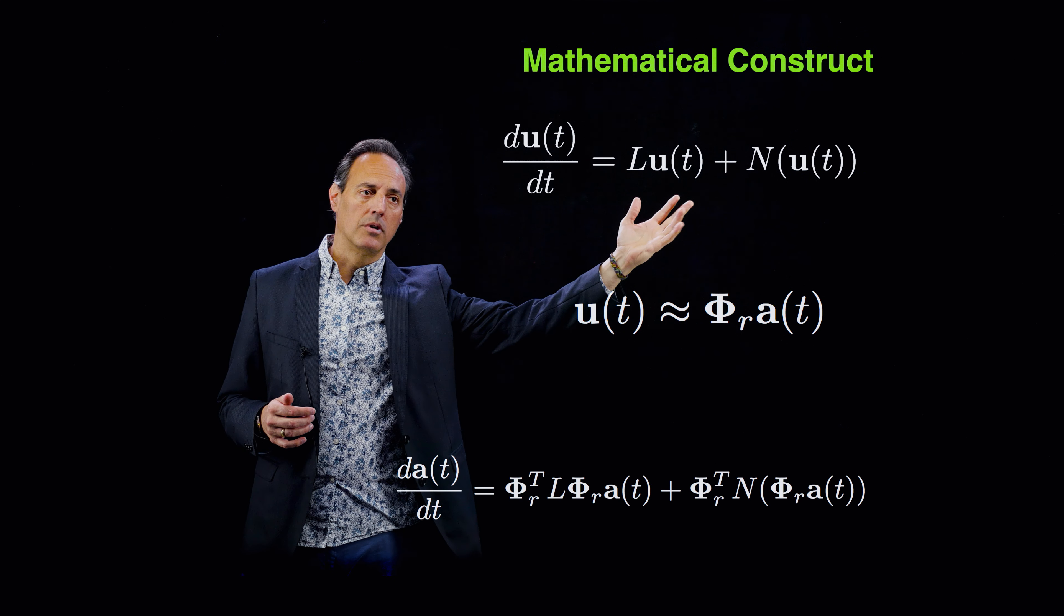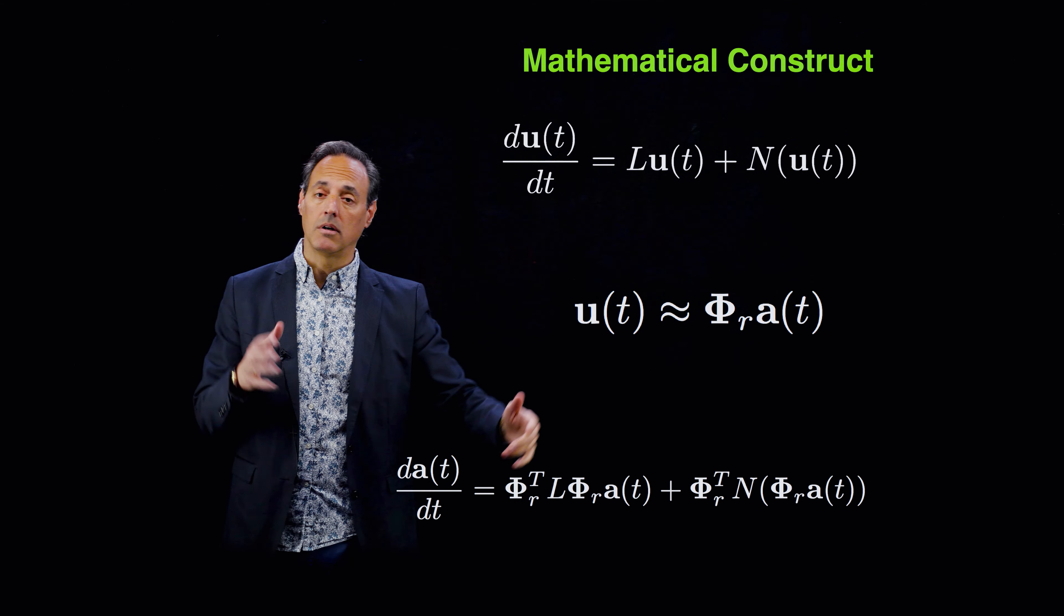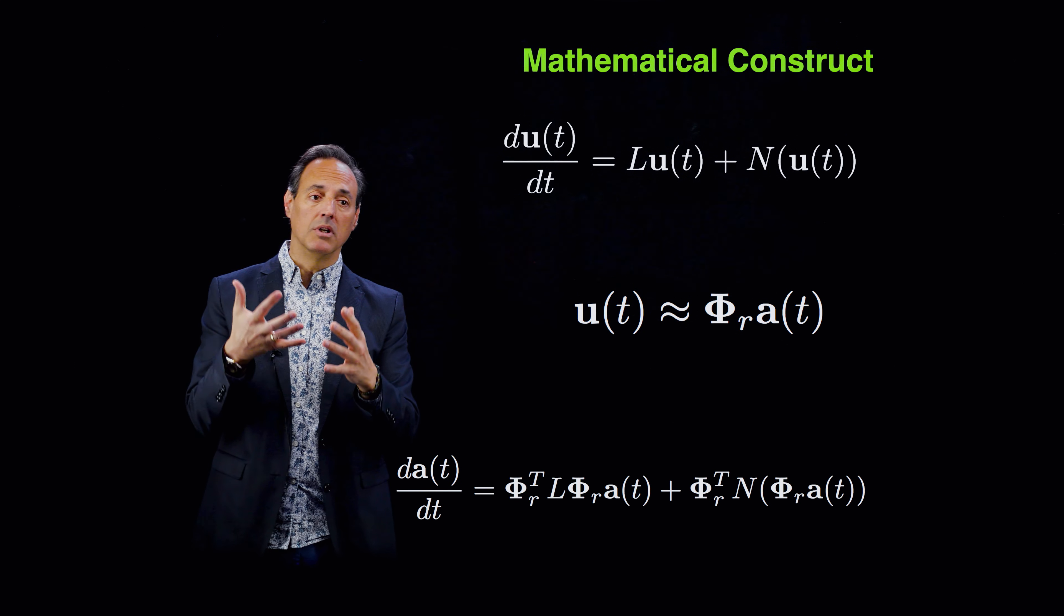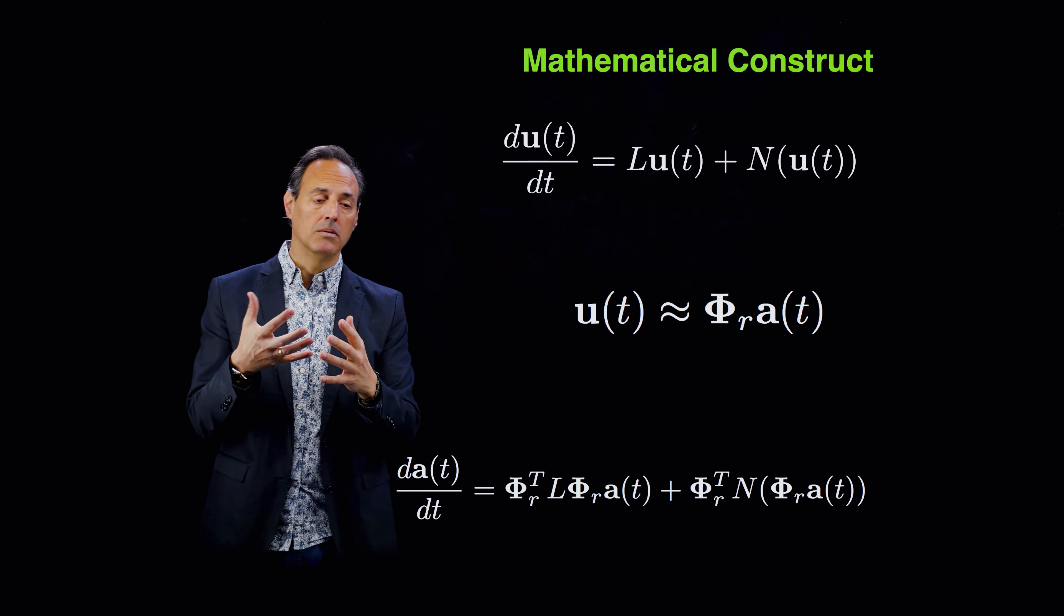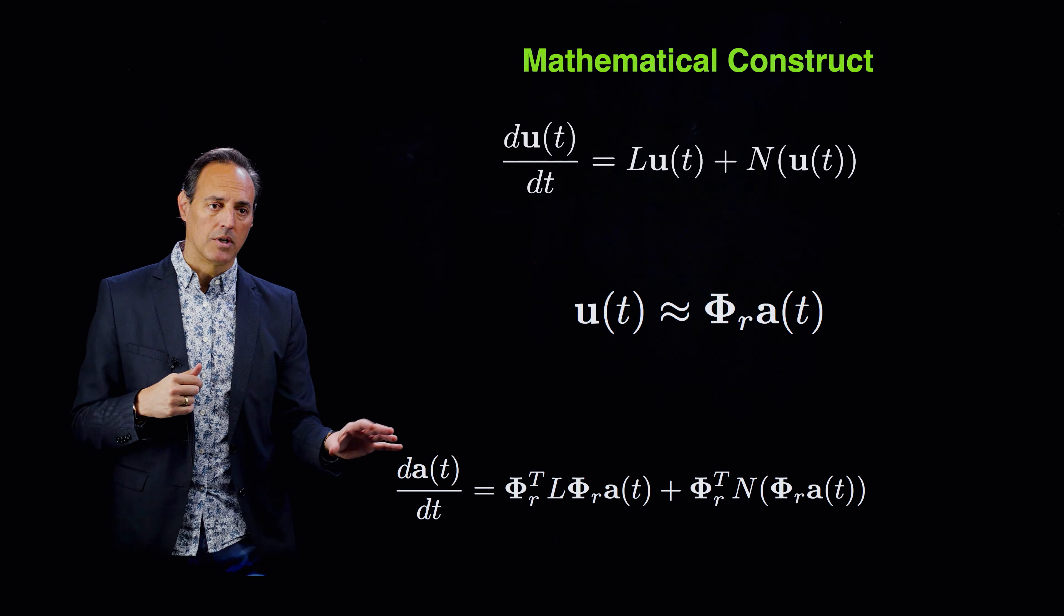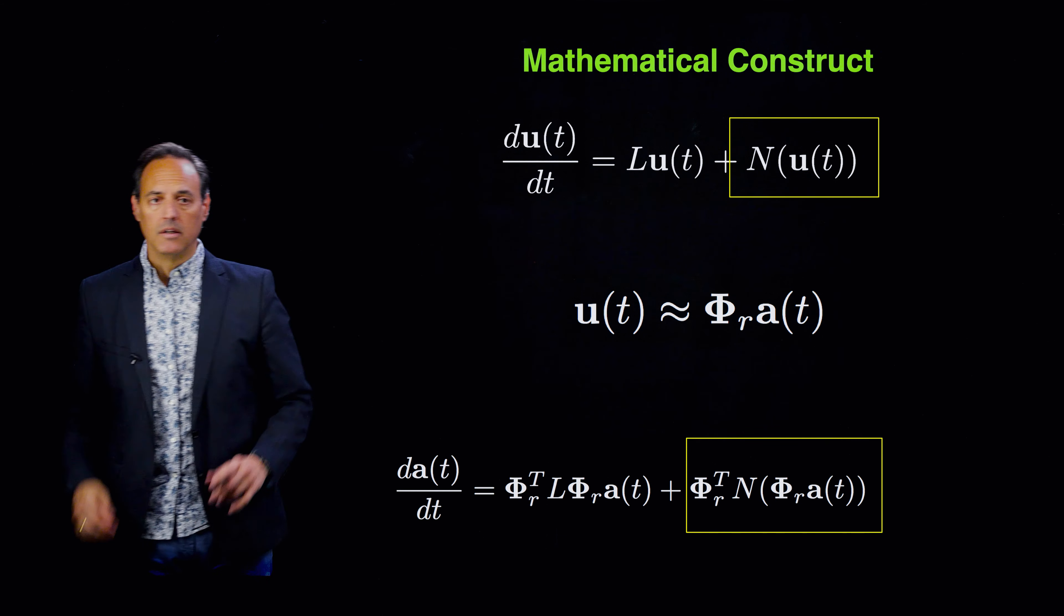We want to get to this idea of building a reduced order model, which is to take the high dimensional system and find some surrogate model which is much smaller dimensional. Here's the mathematical architecture we've been talking about over the last several lectures: some PDE system that was discretized into some high dimensional state space representation, with linear and nonlinear components.